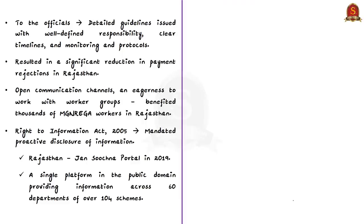As the dialogues kept evolving, detailed guidelines were issued with well-defined responsibility, clear timelines, proper monitoring, and protocols that officials should follow. All these were laid out properly. This resulted in a significant reduction in payment rejections in Rajasthan. In a period of one year from when these workshops were held, the Rajasthan government was able to clear Rs. 380 crore worth of payments to workers that were earlier stuck due to rejections.